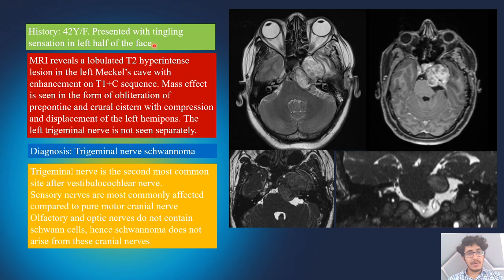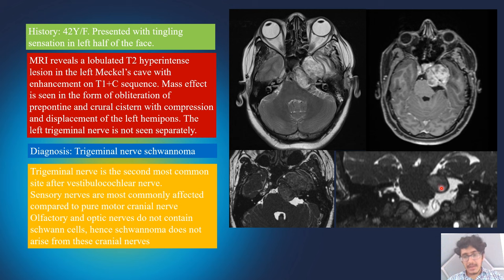A 40-year-old woman presented with tingling sensation in the left half of the face. MRI revealed a lobulated T2 hyperintense lesion in the left Meckel's cave with heterogeneous enhancement, causing mass effect with obliteration of the cisternal space and displacement of the left hemi-pons. The trigeminal nerve was not seen separately on the left, whereas it was visible on the right. This was trigeminal schwannoma.